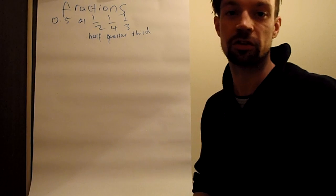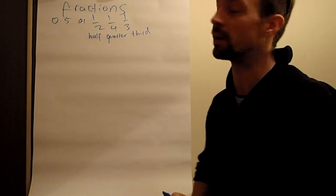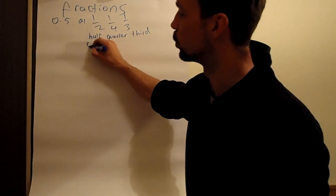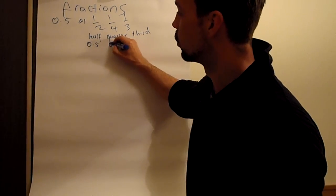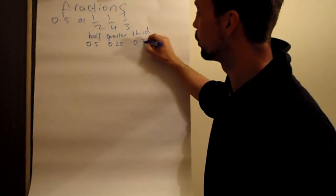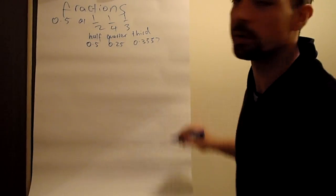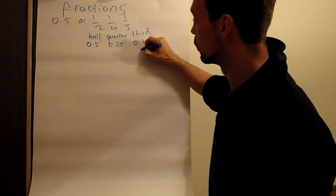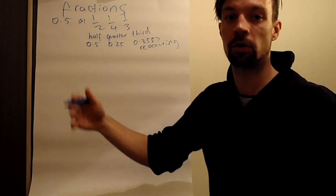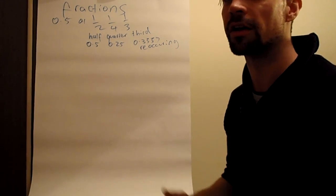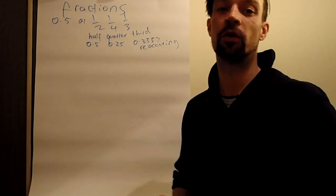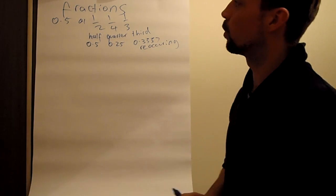And there are many, many different fractions, but these are the most basic. And if you were to represent these with decimal points, this would be 0.5, 0.25, 0.33333 recurring, because it goes on and on and on. Because a third, you can never make a whole number. It will go on forever and for infinity. So these are what fractions are.